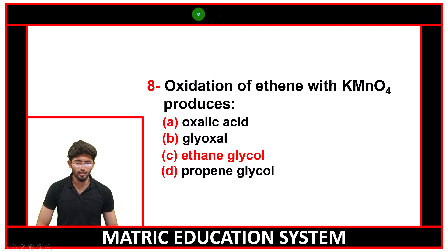If we talk about the 8th MCQ, oxidation of ethene with KMnO4 produces, remember that oxidation of ethene is hydroxylation and in hydroxylation, ethane glycol compound is obtained.